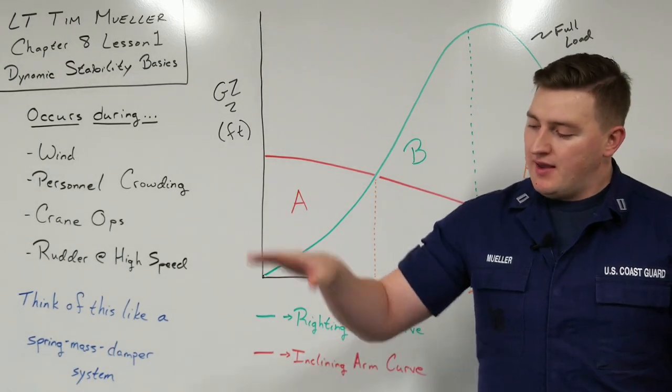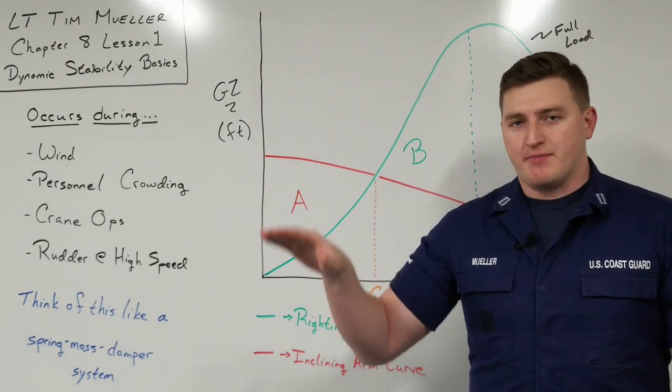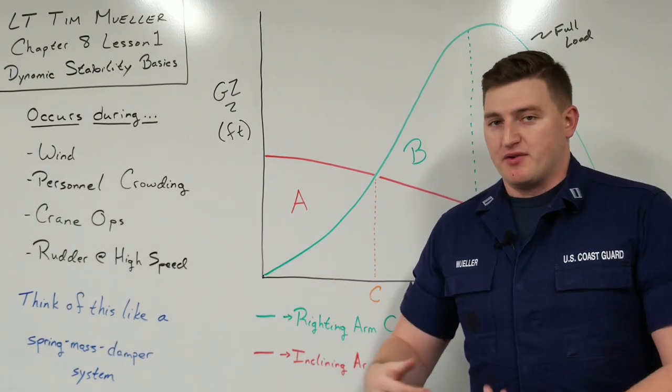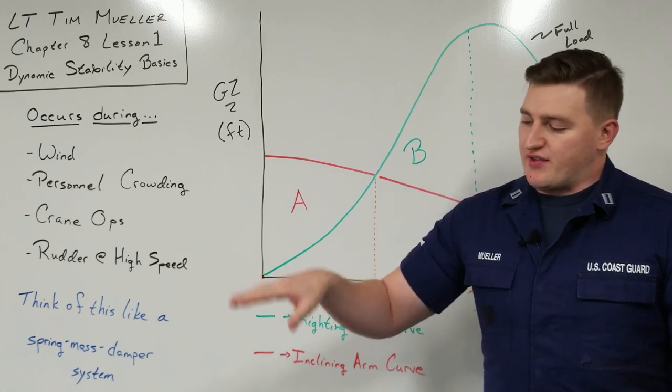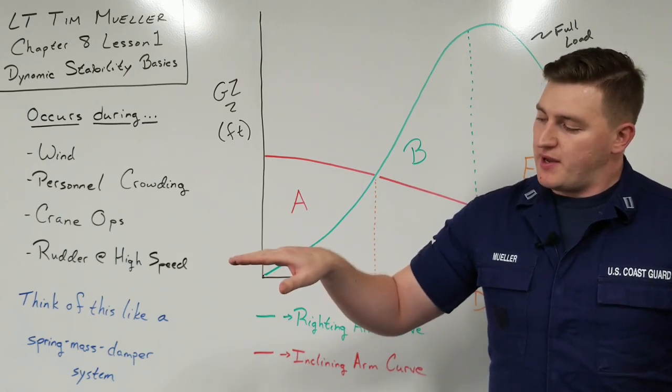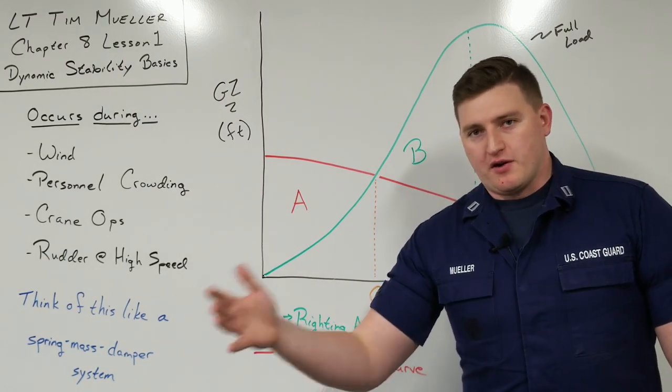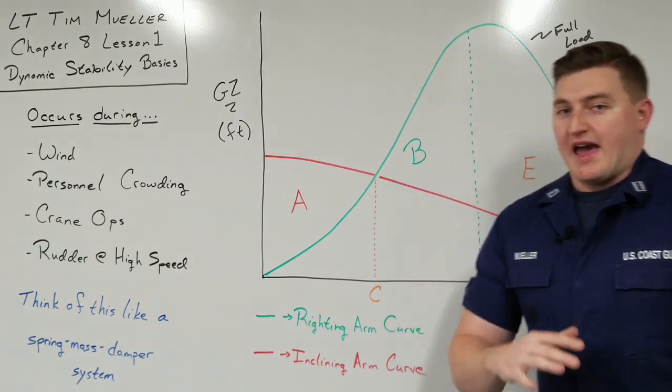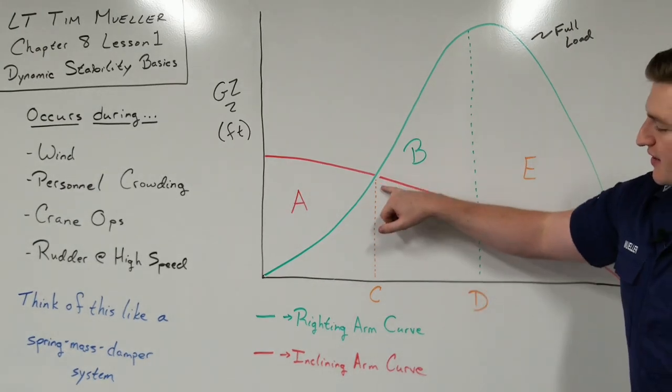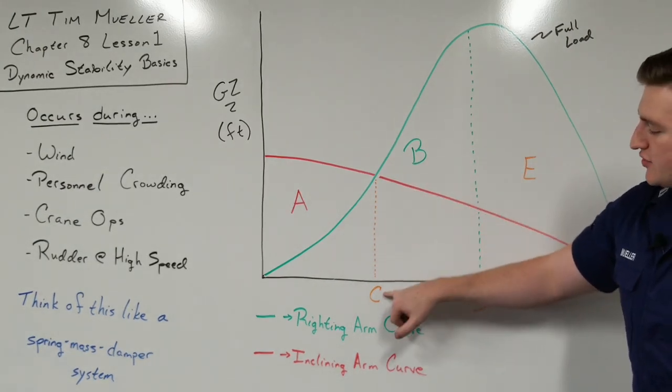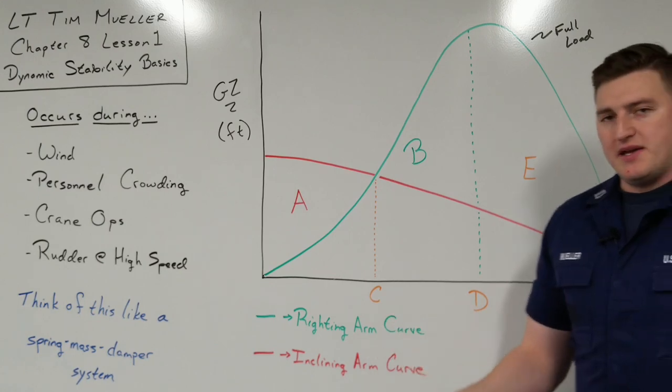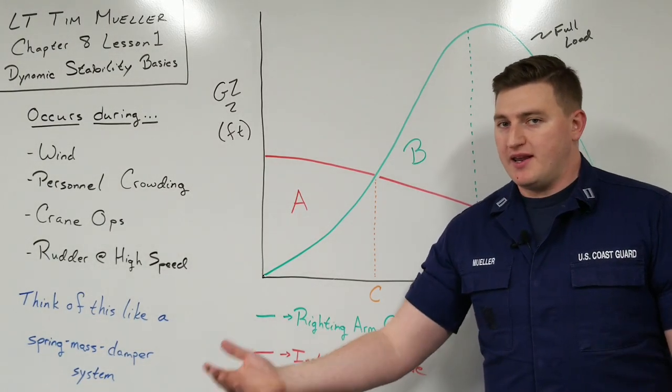After that spring oscillates and all that energy is dissipated, so in the spring, I mentioned this due to friction and fluid drag, that the spring eventually levels out to a spot. In a ship, in the water, the vessel causes waves to either side that dissipates the energy. After all that dissipation, it's going to settle out at an equilibrium point. Charlie, or C. This is going to be our angle of semi-permanent heel.